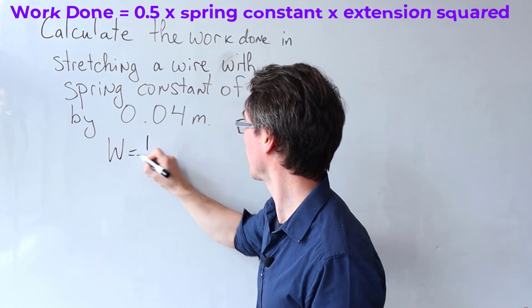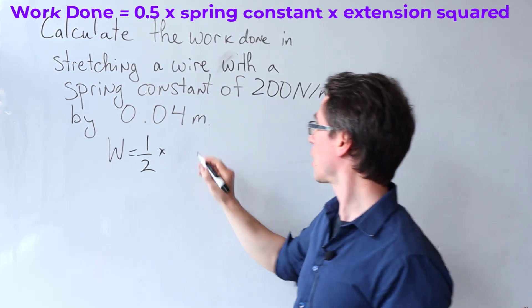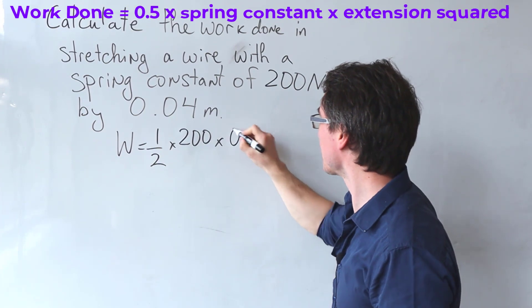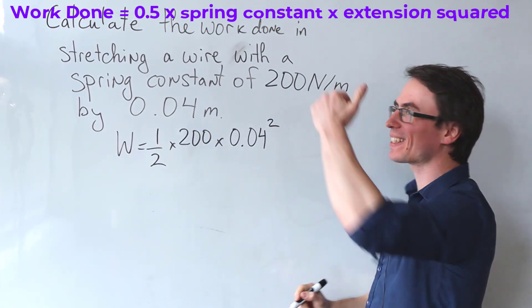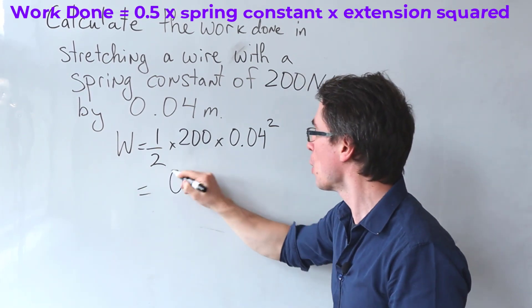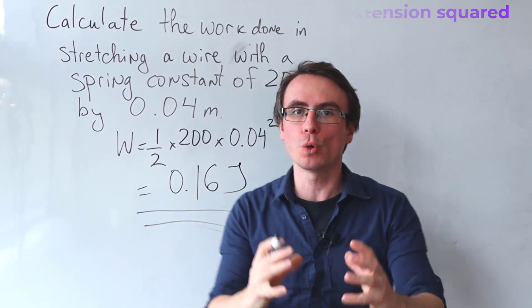So we can write down that the work done will be equal to a half times our spring constant, which is 200, times 0.04 squared. Do not forget the square. This is a very common mistake. And if we multiply those out, we will get 0.16 joules.